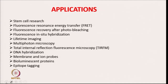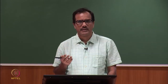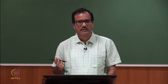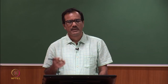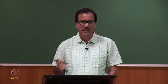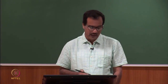In confocal microscopy, a laser light is focused onto a fluorescent specimen through the objective lens. The mixture of reflected and emitted light is captured by the same objective and sent to a dichroic mirror. The reflected light is deviated by the mirror while the emitted fluorescent light passes through the confocal aperture to reduce out-of-focus light; the focused light then passes through an emission filter to the photomultiplier tube. To generate an entire image, the single point is scanned in an XY manner as the laser focus is moved over the specimen. There are many applications of confocal microscopy including stem cell research, FRET interaction studies, fluorescence recovery after photobleaching, in-situ hybridization, lifetime imaging, multi-photon microscopy, and TIRF microscopy.